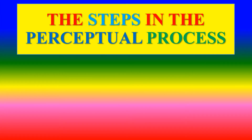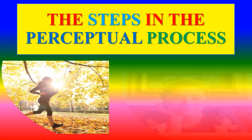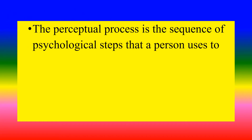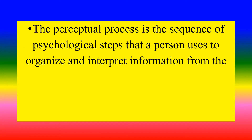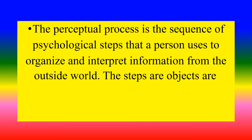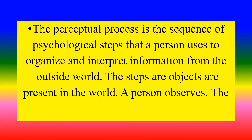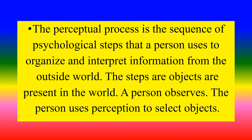Next section: the steps in the perceptual process. The perceptual process is the sequence of psychological steps that a person uses to organize and interpret information from the outside world. Objects are present in the world, a person observes, and the person uses perception to select objects.